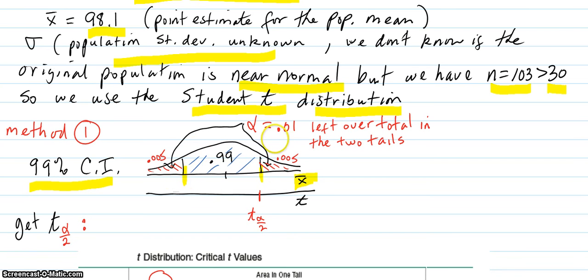So that leaves 0.01 outside of those boundaries, 0.01 leftover total in the two tails. So a t-score on one of the boundaries is the t-score for the alpha, which is the whole total, 0.01 divided by 2. So it's the t corresponding to 0.005. We've got to get that t-value to move forward.